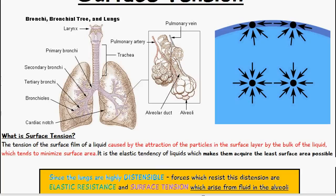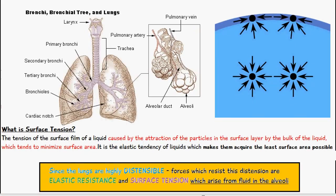It's a form of elastic tendency of liquids which makes them acquire the least surface area possible, as shown by this image. Since the lungs are very elastic, stretchy, and distensible, the forces which resist this distension are elastic resistance, whether through structural deficiency, for example in pulmonary fibrosis which we discussed in the previous video, and also surface tension which arises from the fluid in the alveoli.